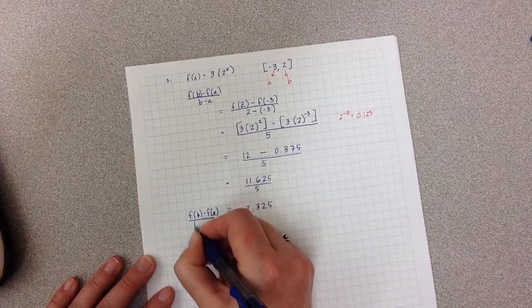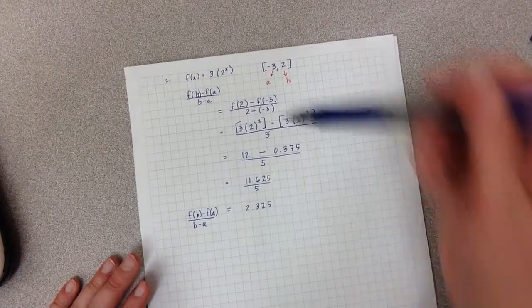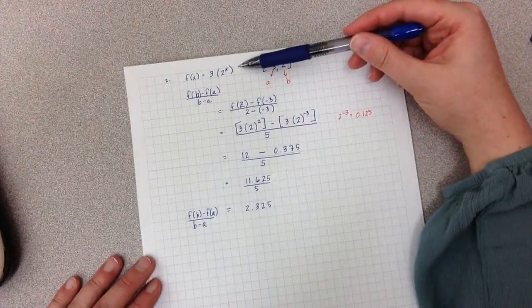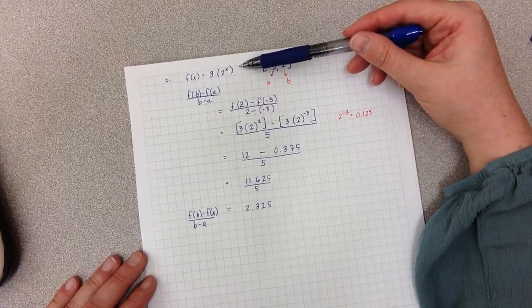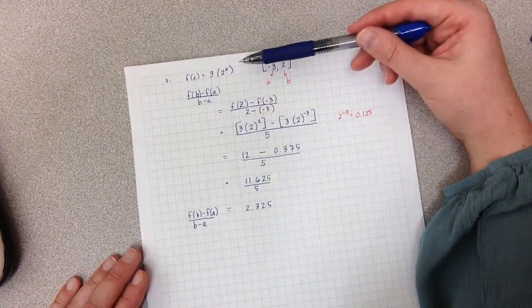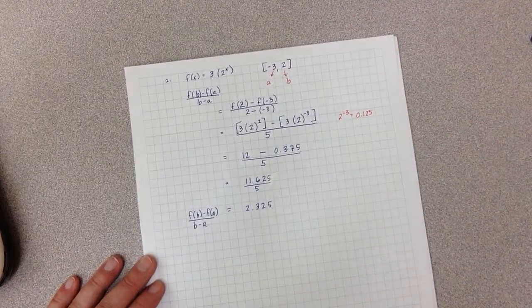So unlike the linear, in the exponential, this 2.325 does not appear in the original equation anywhere. So the average rate of change for an exponential is not something I can just read from the equation. I actually have to go through this whole process in order to find the average rate of change there.